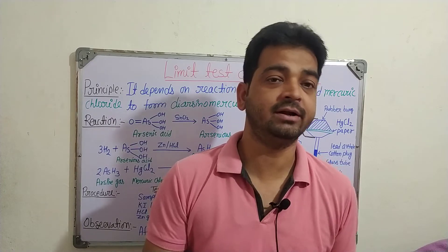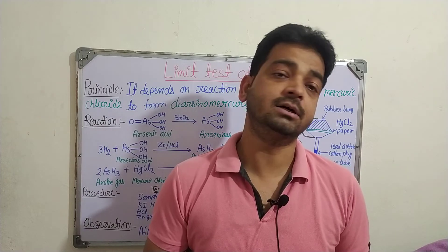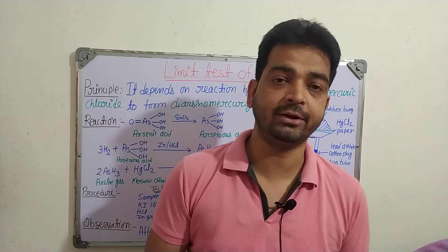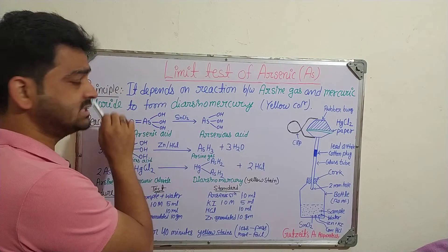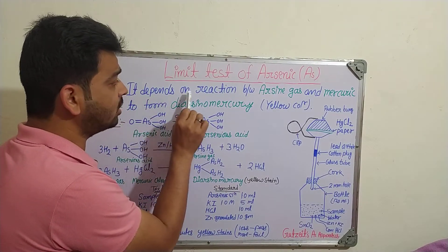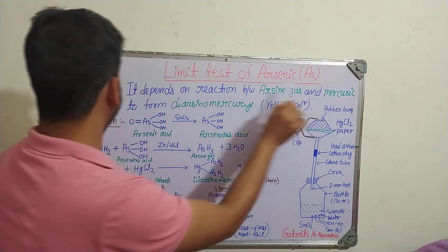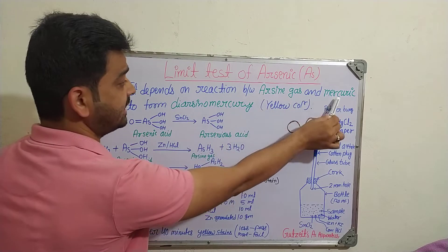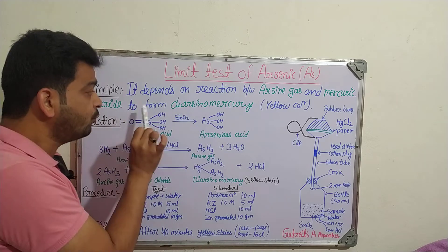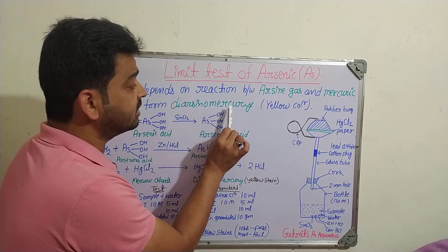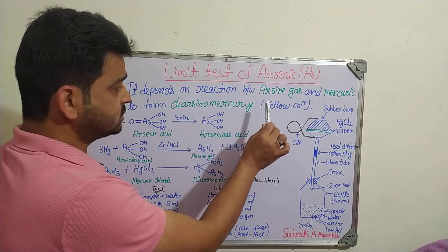Here, we are going to use something different apparatus — not necessarily a cylinder. We are going to use the Gutzeit arsenic apparatus. So let us start the limit test of arsenic. When we talk about the principle, it depends on the reaction between arsenic gas and mercury chloride. That is the main theme of the limit test of arsenic — to form diarseno-mercury, which will be yellow in color. So this is the principle.